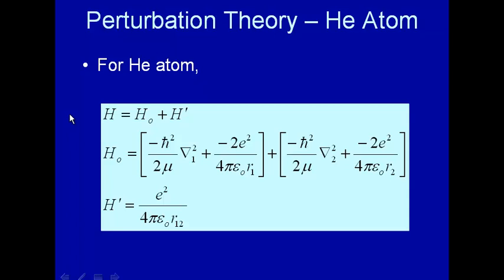Let's try to get an approximate description of the helium atom. In particular, we want to know what the corrected energy is. As we said, we start with the Hamiltonian and divide it into two parts: H0, the Hamiltonian whose eigenvectors and eigenfunctions we know — we know the wave functions and energy — and then we add on a perturbation Hamiltonian. Ideally, the perturbation is small, meaning it's a small correction to the energy compared to the energy from the unperturbed Hamiltonian.